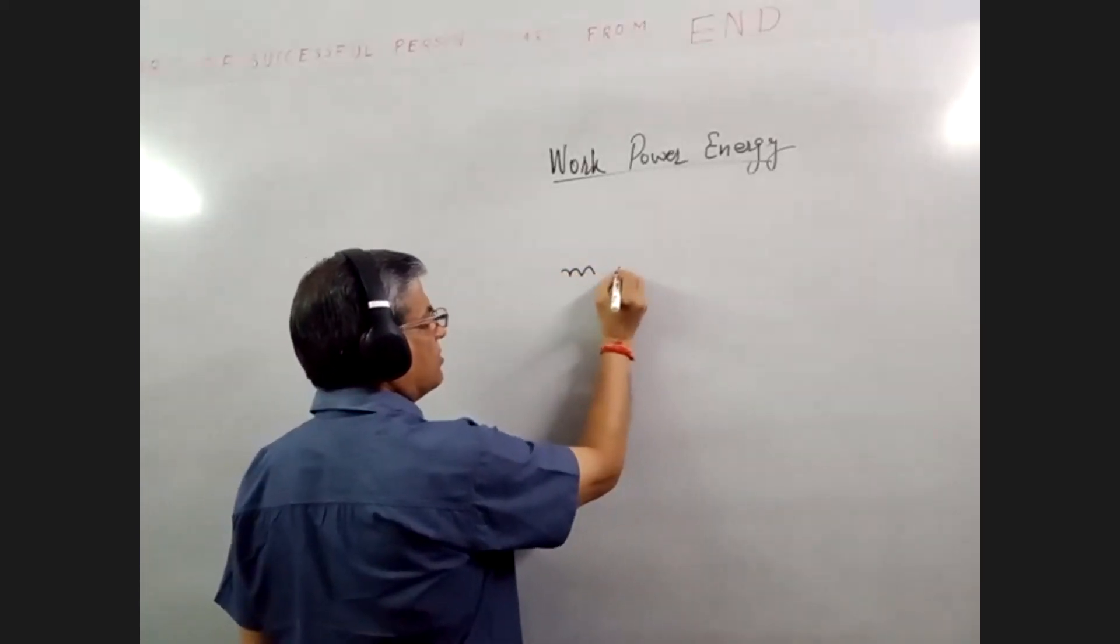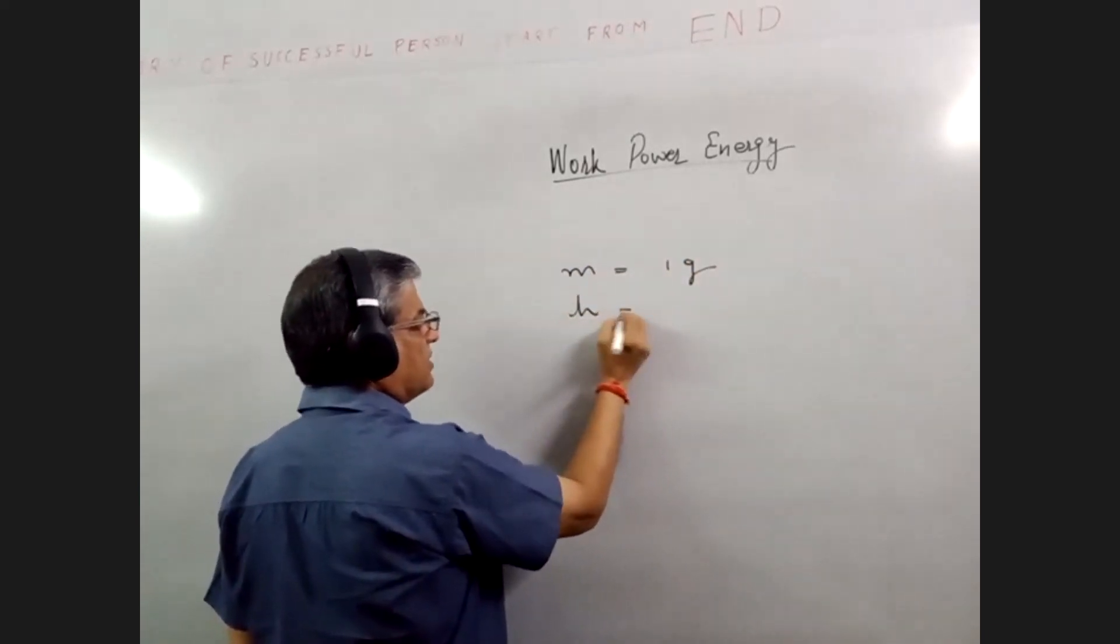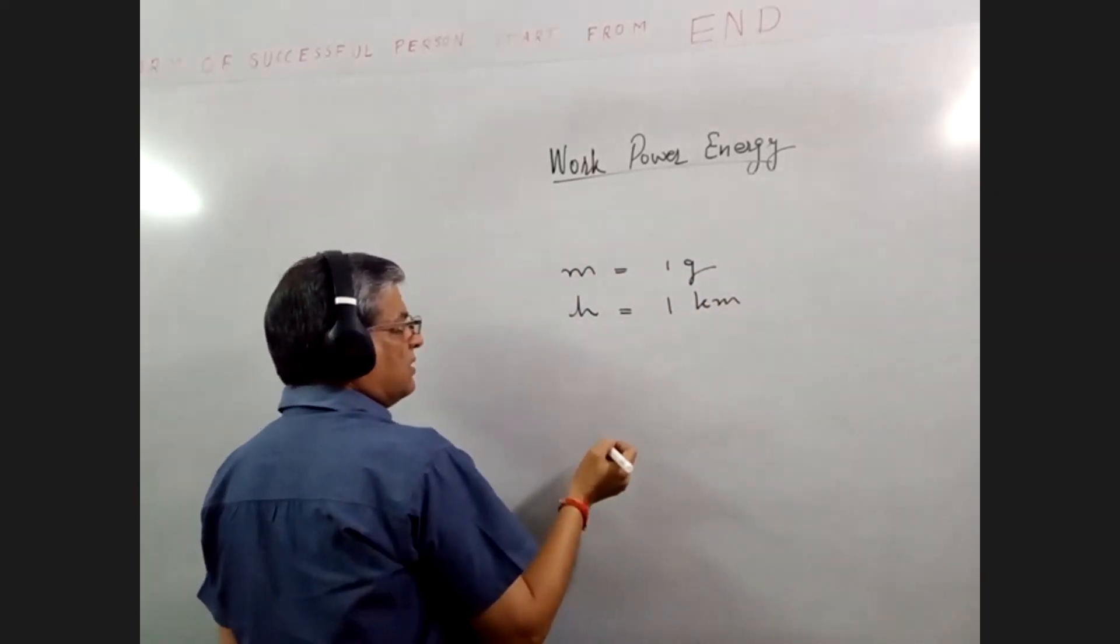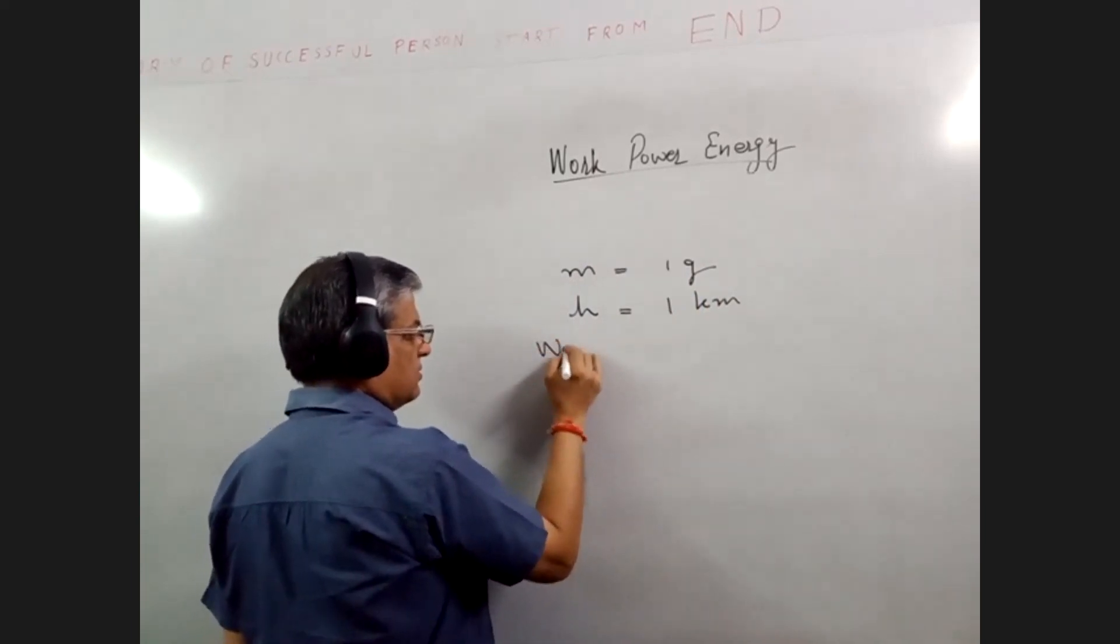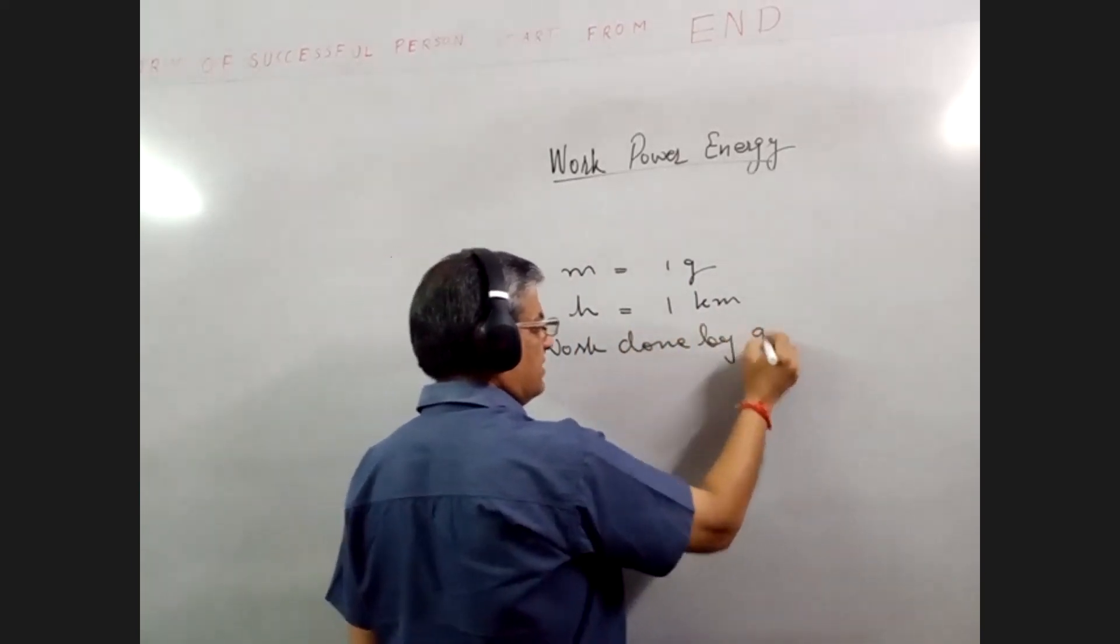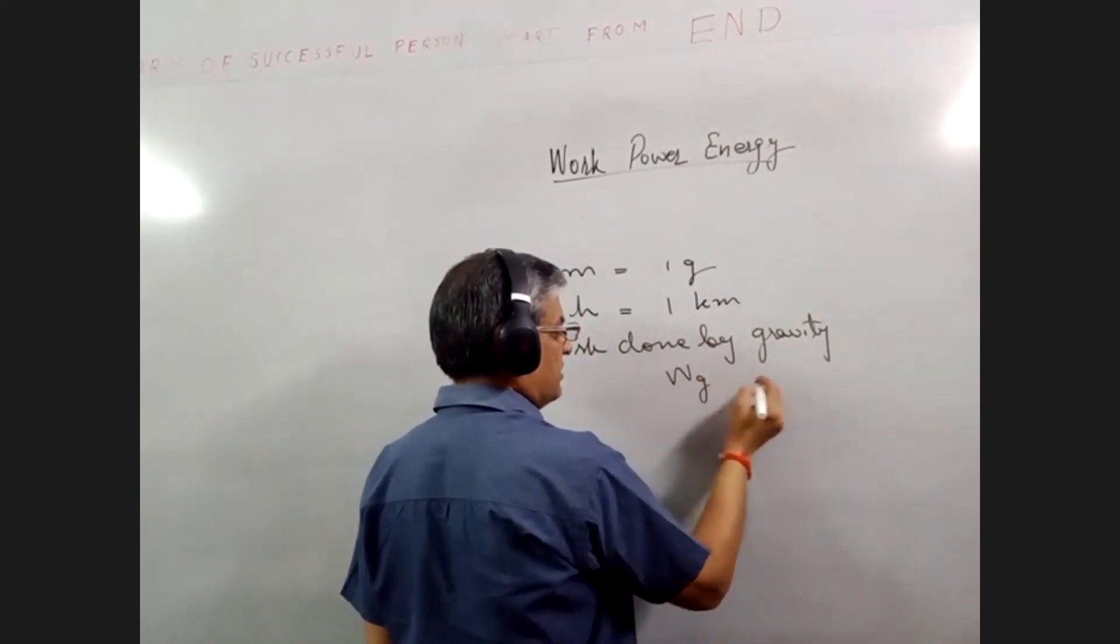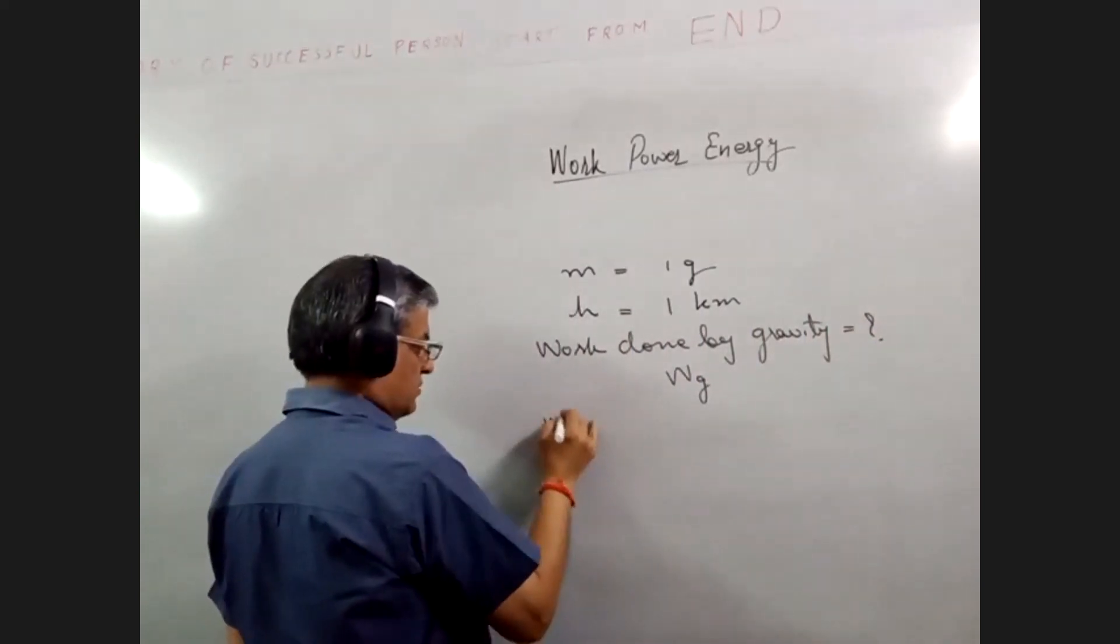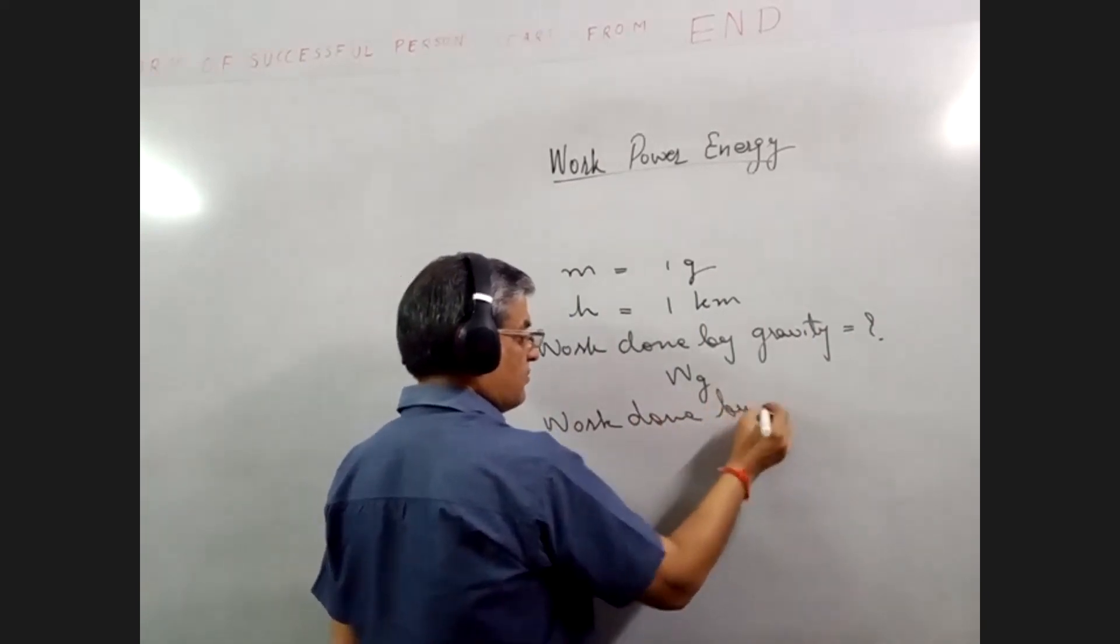So mass of raindrop is 1 gram, height with which it is falling is 1 kilometer. We have to find out work done by gravity, W due to gravity, and work done by air resistance.